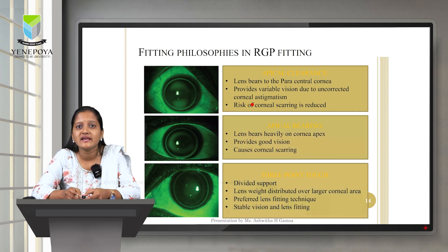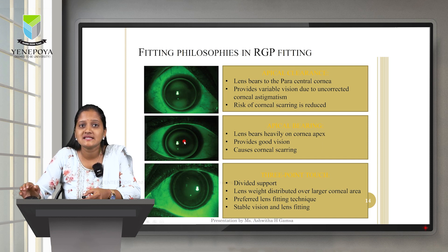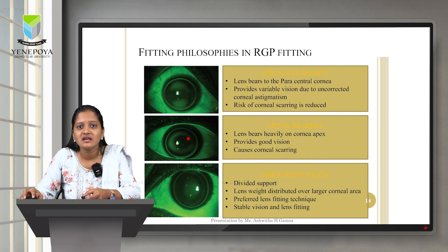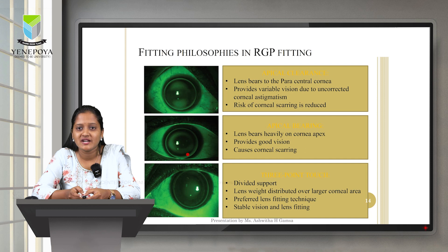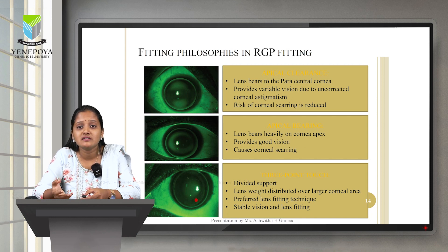The second is apical bearing, where the lens bears heavily on the corneal apex, providing good vision but with a high chance of corneal scarring. The third and preferred fitting is three-point touch, where the lens weight is distributed over a larger corneal area with divided support — not only at the center or periphery but throughout the lens surface — resulting in stable vision and better visual acuity.